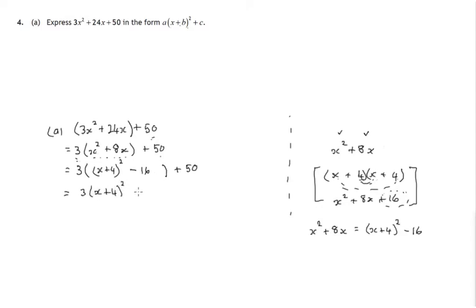3 lots of x plus 4 all squared minus 3 times 16 is 48. And then we've got this plus 50. Remember, it doesn't come under the influence of that 3. The influence of that 3 stops at these brackets. So it's just 50, not 3 times 50. So finally, we've got 3 lots of x plus 4 all squared. Take 48 from 50 and we get 2. So we've finally written it in this form as requested.